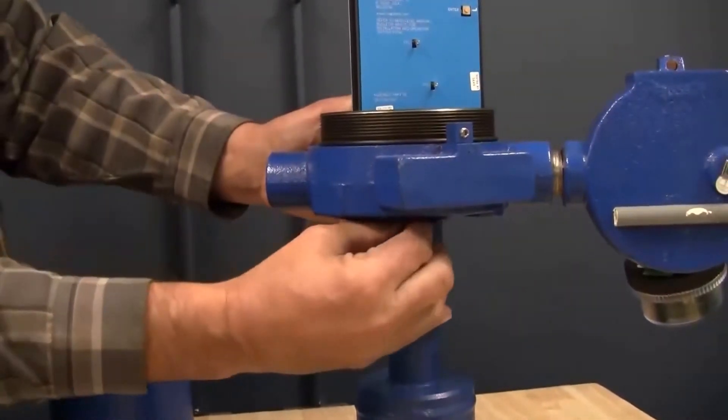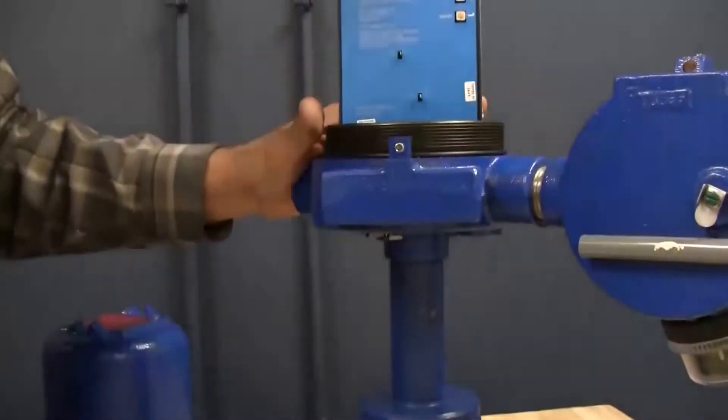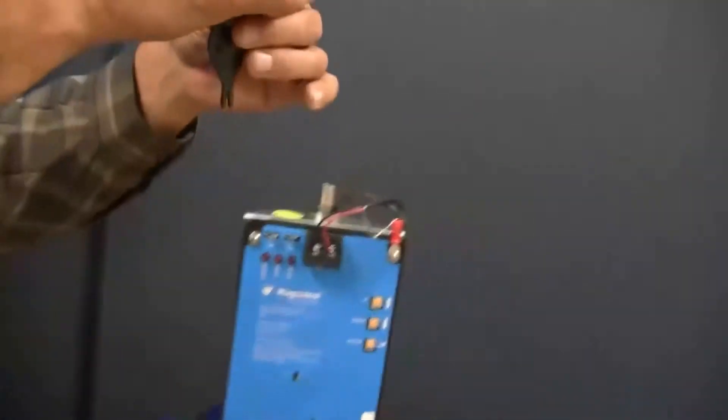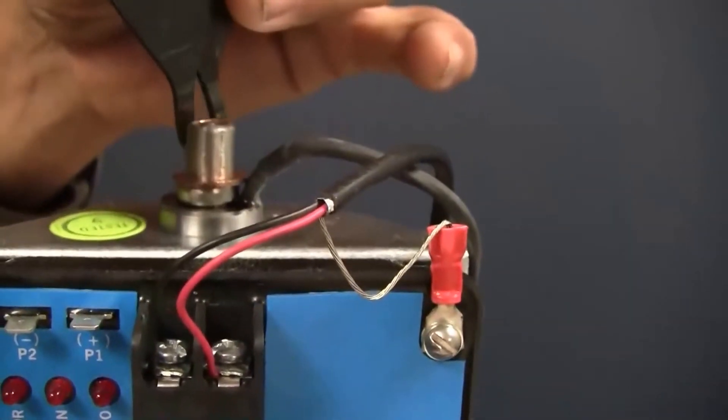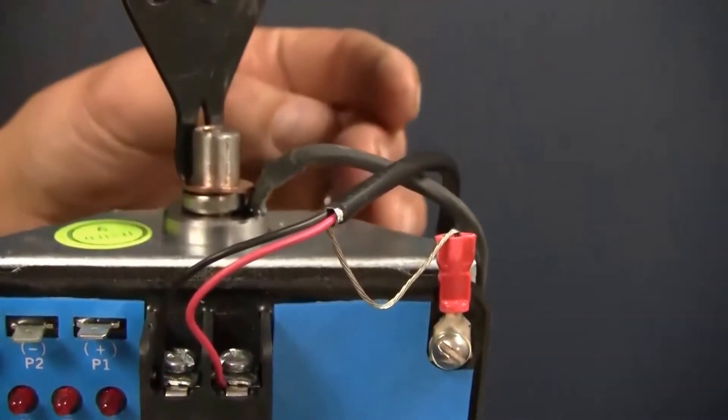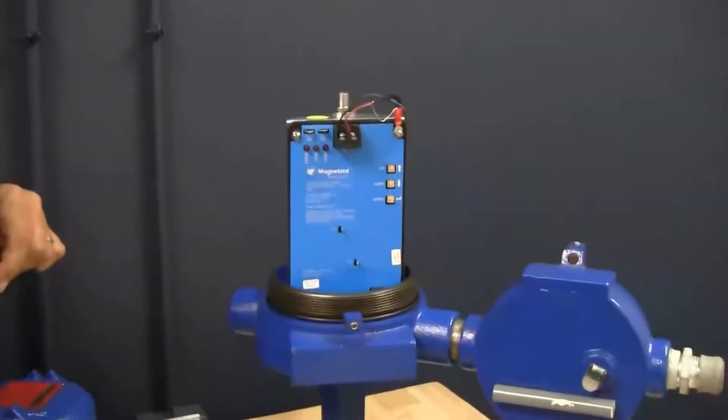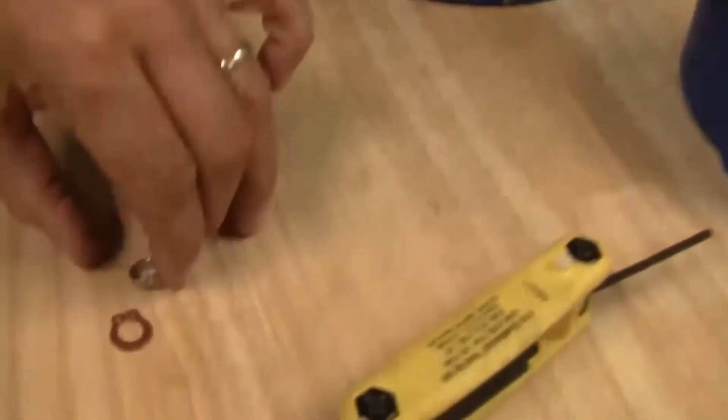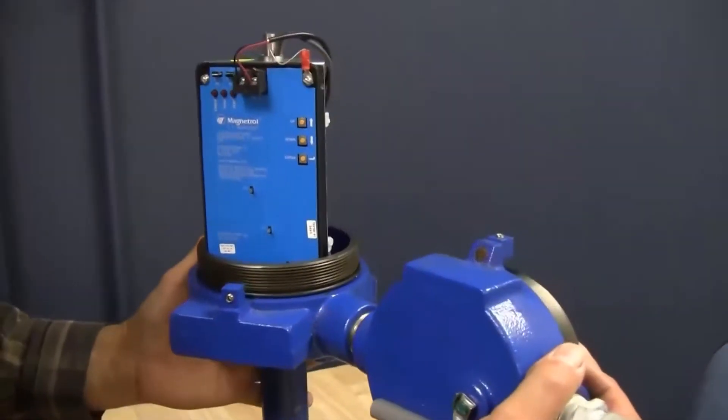Once you have those loosened up, you need to also remove the C-clip that is up here on the top, this brass colored C-clip. It's a spread clip. Take that off. There's a little silver washer right there we can remove. And then we can lift the entire assembly off.